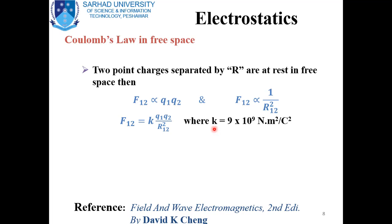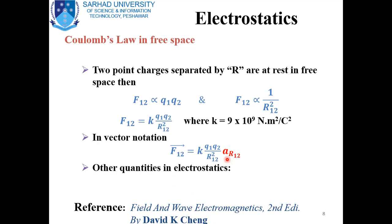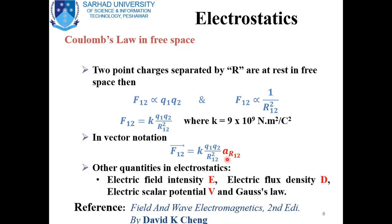Here K depends upon the permittivity of free space. In vector form, force is a vector, so it can be written as a magnitude along with a direction. The blue expression represents the magnitude of the force and the red represents a unit vector along the radial direction. Other quantities related to electrostatics include electric field intensity, flux density — known as field quantities — and the third quantity, scalar potential, whose expression can be written as the negative gradient of that scalar.